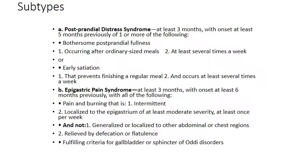The second subtype is epigastric pain syndrome. The patient complains for at least three months, with onset at least six months previously, of all of the following: pain or burning that is intermittent, localized to the epigastrium, of at least moderate severity, at least once per week. This pain is not generalized or localized to other abdominal or chest regions, not relieved by defecation or flatulence — to differentiate it from irritable bowel syndrome — and not fulfilling criteria for gallbladder or sphincter of Oddi disease.